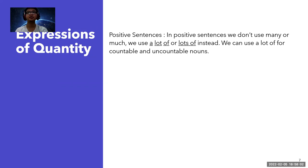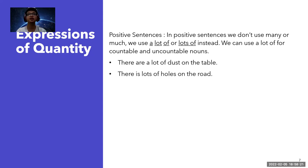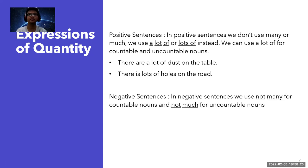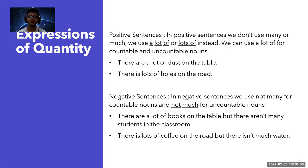For expression of quantity in positive sentences, we don't use 'many' or 'much' — we use 'a lot of' or 'lots of' instead. You can use both for countable and uncountable nouns. For example: 'There are a lot of dust on the table' or 'There is a lot of forks.' In negative sentences, we use 'not many' for countable nouns and 'not much' for uncountable nouns. For example: 'There are a lot of books on the table' but 'There aren't many students in the classroom.' And: 'There is lots of coffee on the road, but there isn't much' — like we spilled coffee on the road.